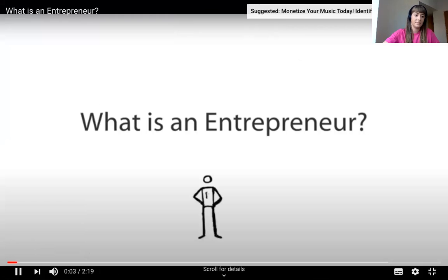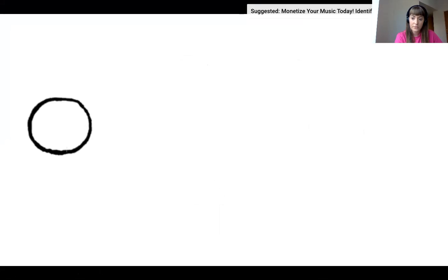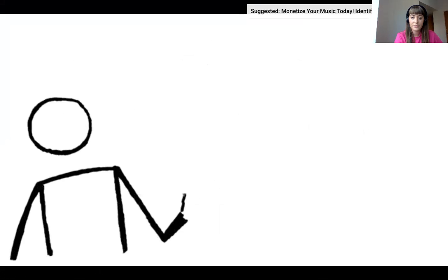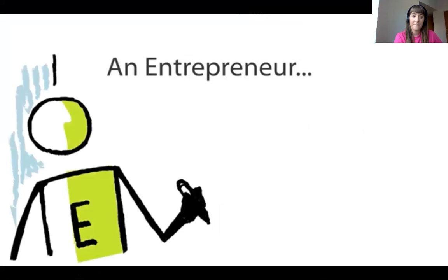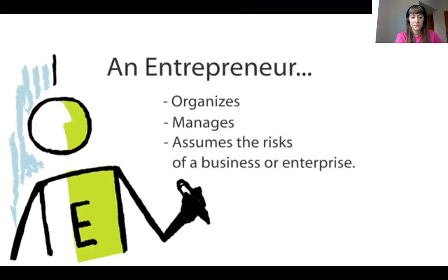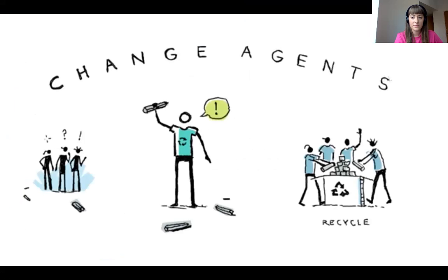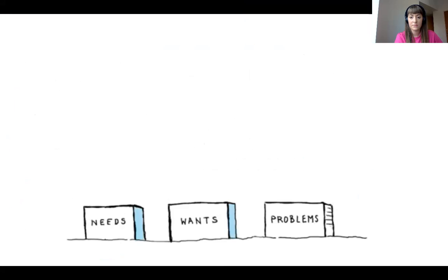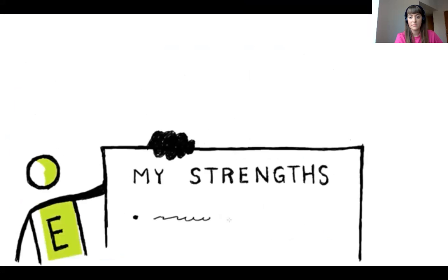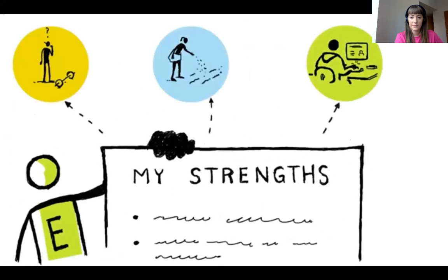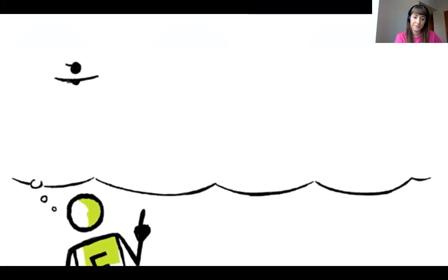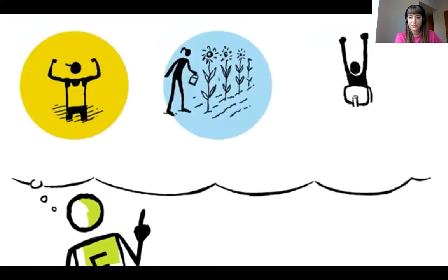Everyone seems to be talking about entrepreneurship. But what exactly is an entrepreneur? The Merriam-Webster dictionary defines an entrepreneur as someone who organizes, manages, and assumes the risk of a business or enterprise. Entrepreneurs are change agents. They see needs, wants, and problems as challenges to be overcome, and they know they are the people who can help find solutions and meet needs. Entrepreneurs know that they have unique skills and talents that can make a difference in the world — they can meet needs, do something in a new way, add beauty, or solve the problem.